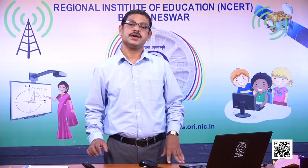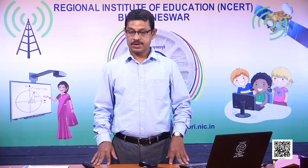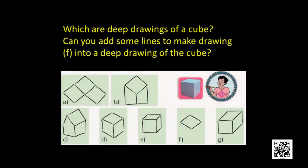Now, which are the deep drawings of a cube? You see — A, can it be? No. B, no. C, no. D, yes. E, yes. F also — no, F will not be a deep drawing of a cube; it is just one face of the cube. You test for G — it is a cube; it is not a cube.